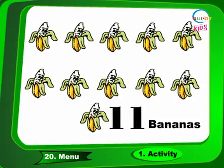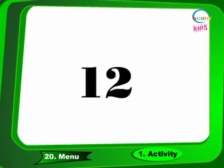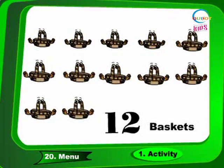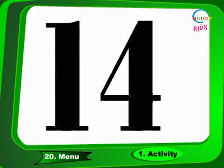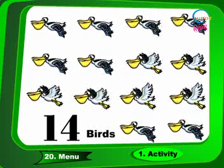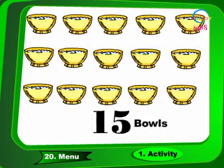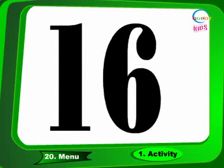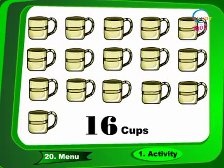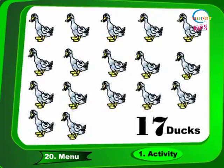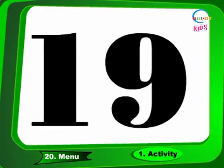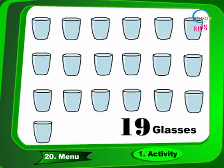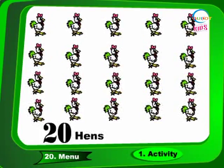Eleven bananas. Twelve baskets. Thirteen bells. Fourteen bears. Fifteen bowls. Sixteen cots. Seventeen ducks. Eighteen eggs. Nineteen glasses. Twenty hens.